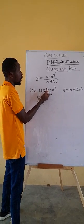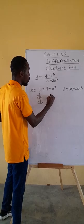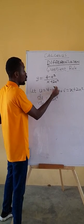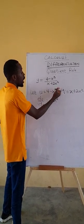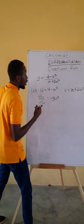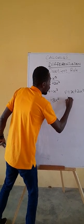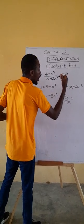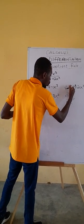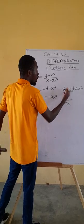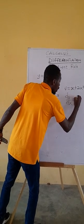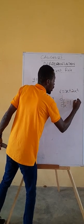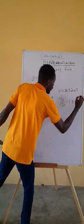For du/dx: the differential of the constant 4 is 0, and the differential of x cubed gives us minus 3x squared (we drop the exponent and reduce it by 1). For dv/dx: the differential of x has coefficient 1, and the differential of 2x squared gives us 4x.